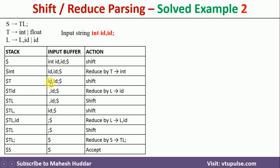Now we shift the next token — 'id' is shifted onto the stack top, leaving 'comma id semicolon $' remaining. Once 'id' is on the stack top, we check if we can apply any rule. Looking at the third rule, L → id, this 'id' can be reduced to L. The input buffer remains the same. Now we need to shift the next token, which is comma, so the stack becomes T L comma. The remaining input is 'id semicolon $'. Since we cannot apply any rule on 'T L comma', we apply a shift.